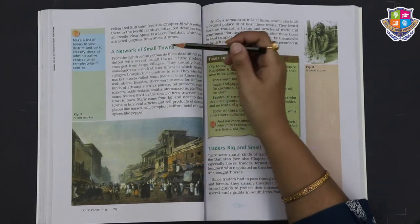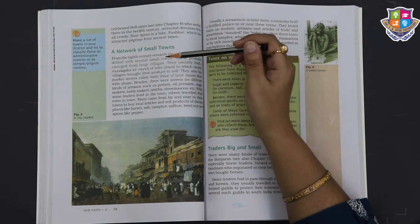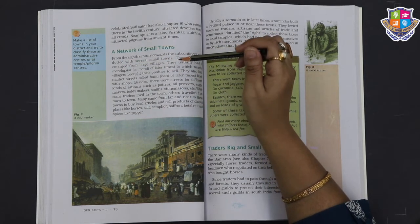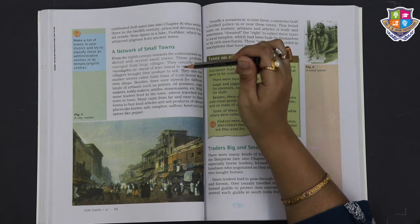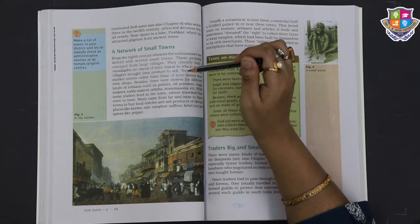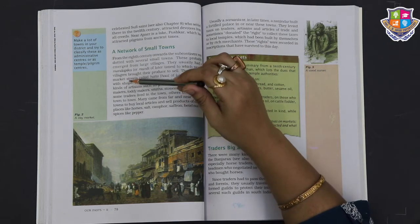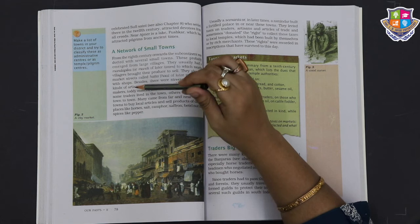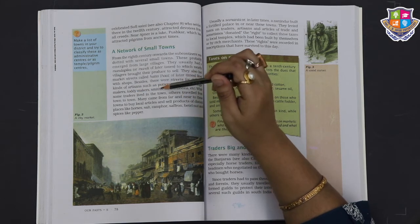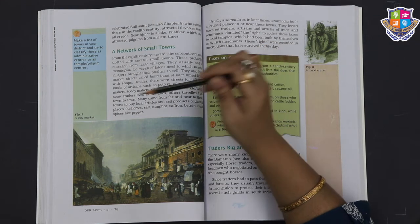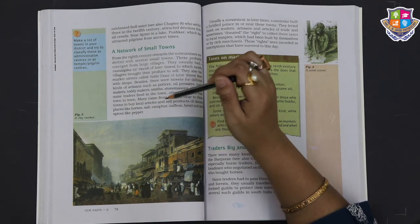Network of small towns. From the 8th century onwards, the subcontinent was dotted with several small towns. These probably emerged from large villages. They usually had a mandapika or mandi of later times to which nearby villagers brought their produce to sell. They also had market streets called hatta or haat of later times, lined with shops. Besides, there were streets for different kinds of artisans such as potters, oil pressers, sugar makers, toddy makers, smiths, stone masons, etc.